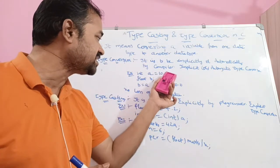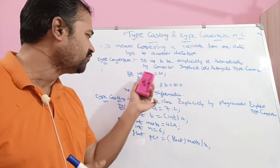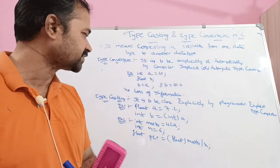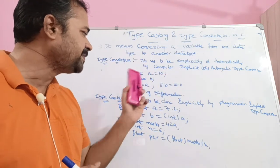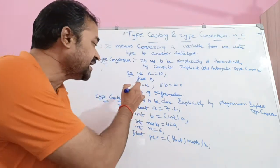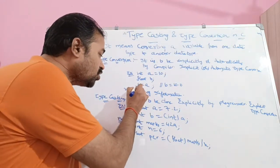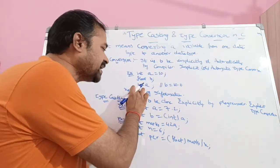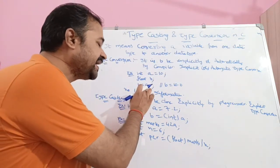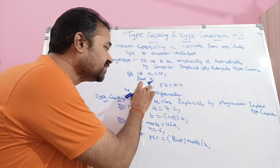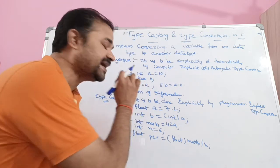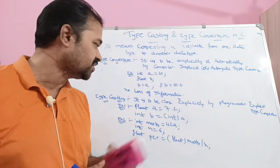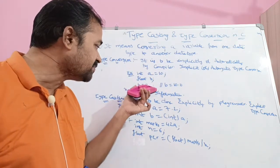Let's see an example. Int A is equal to 10. Float B. Then B is equal to A. Here, B is a float data type variable and A is an integer data type variable.